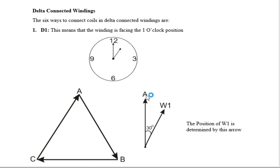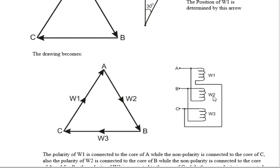As I told you in the previous class on the star connection, the cores are fixed — core A is fixed, core B is fixed, and core C is fixed. Your windings are at one o'clock, and the angle between 12 and 1 is one hour, which we said is 30 degrees. Looking at the three locations A, B, and C, you can see this falls into position A, meaning W1 will be at A, W2 will be at B, and W3 will be at C. Take cognizance of the arrows: the arrow indicates the polarity side of the winding, and the other side is the non-polarity side.